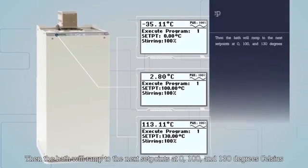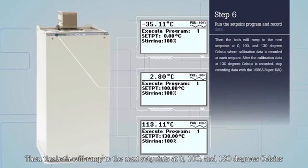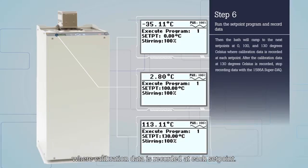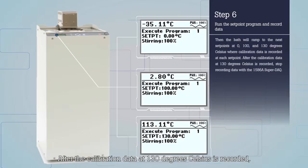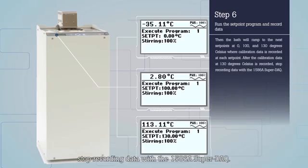Then, the bath will ramp to the next set points at 0, 100 and 130 degrees Celsius where calibration data is recorded at each set point. After the calibration data at 130 degrees Celsius is recorded, stop recording data with the 1586 Super DAC.